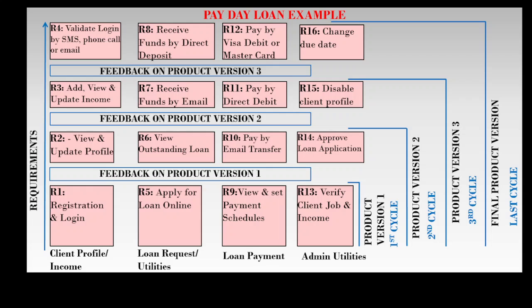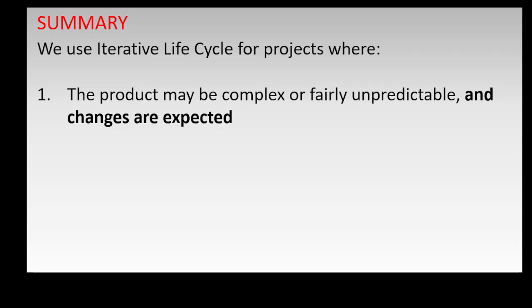In the last cycle the final product version is created, accepted, and delivered to the customer. Note that in this example each product version includes requirements from the four modules: client profile and income, loan request and utilities, loan payment, and admin utilities. For example, the first product version includes registration and login, apply for loan online, view and set payment schedules, and verify client job and income from the four modules.